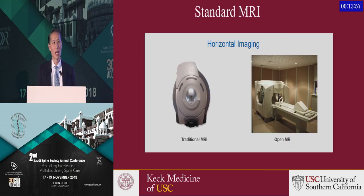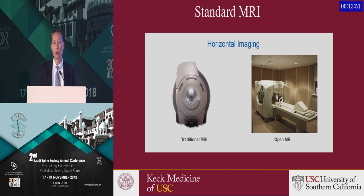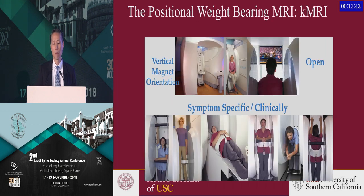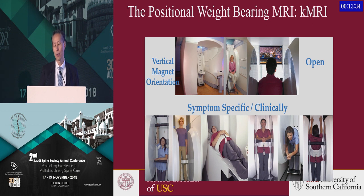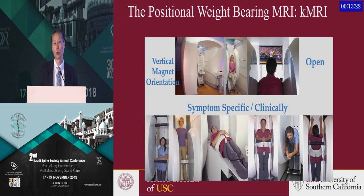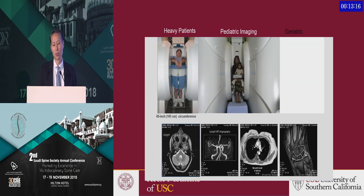Basically, with a standard MRI the patient is lying down. You get a good picture of the spine, but it's not physiologically loaded — it's not in the position of pain. When you get the patient upright, you can actually load the spine and see pathology that you may not see when the patient is lying down. You can also put the patient in the position that hurts them, allowing fairly sophisticated imaging.